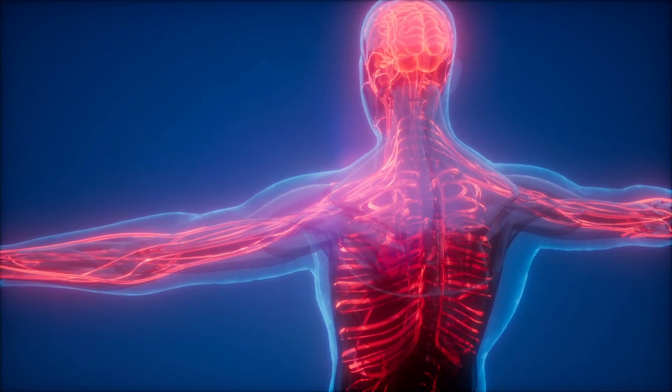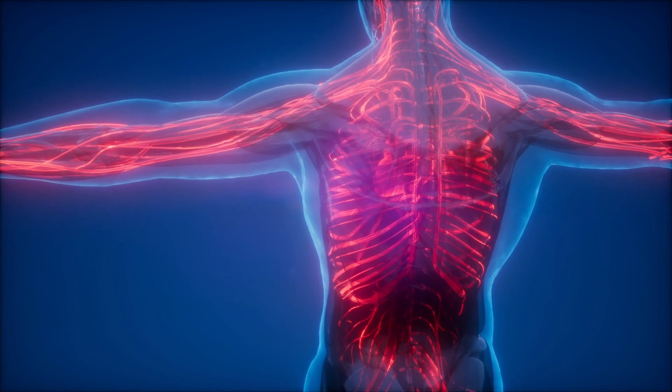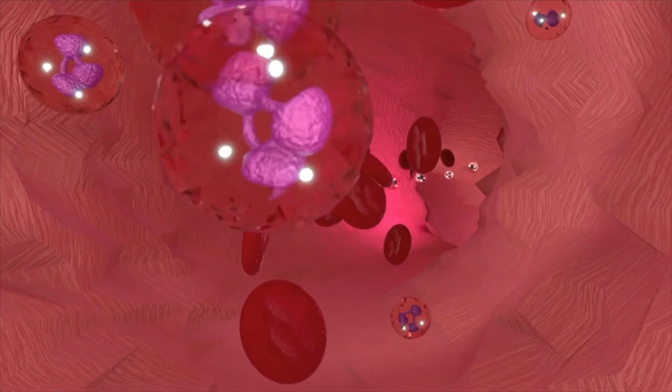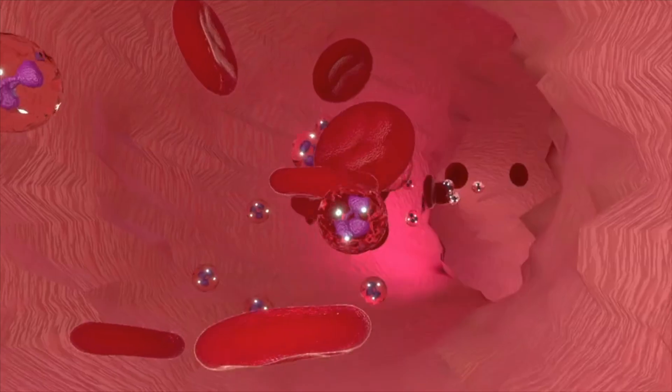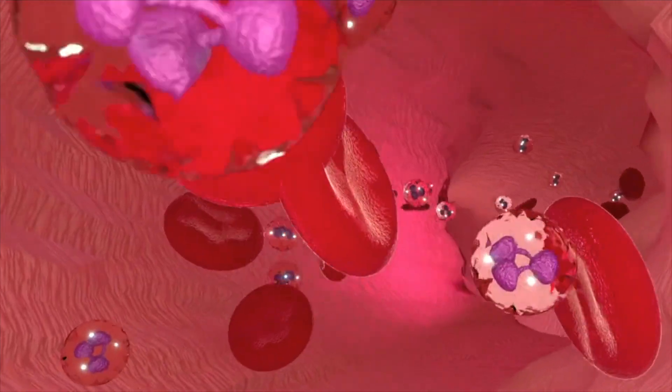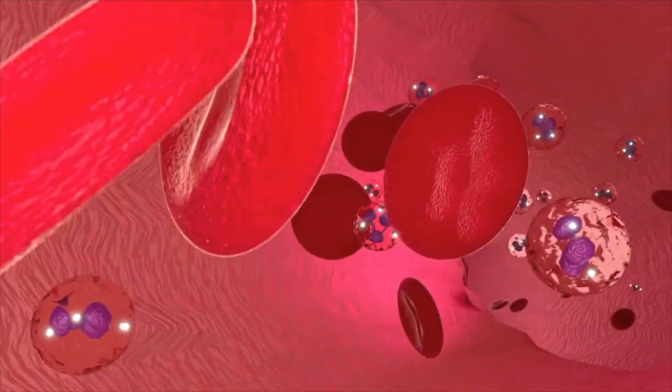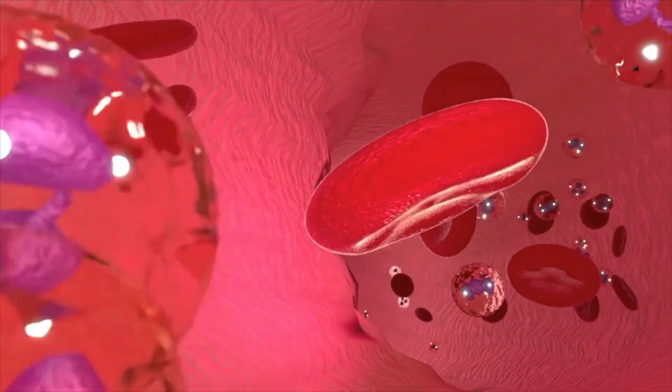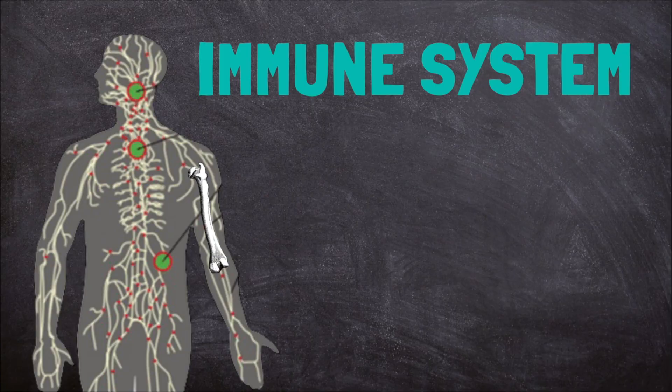Inside your body right now is a tiny army of cells attacking and destroying harmful antigens like bacteria and viruses that can make you sick. This incredible body system is called the immune system. Special organs, cells, and tissue in your body make up your immune system.